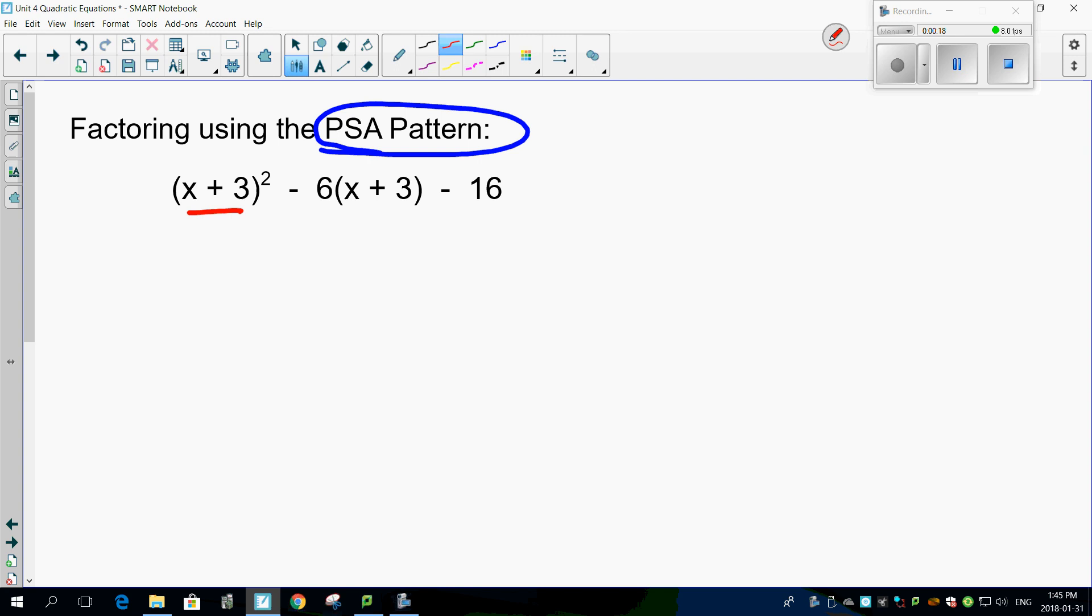Look, this and this are the same. So can't I just call this A? I'm going to call this guy A as well. So if you think about this, this is the same as saying A squared minus 6A minus 16.